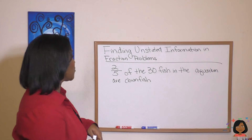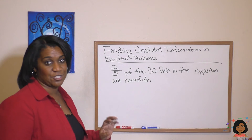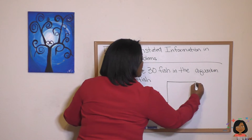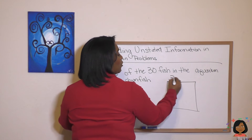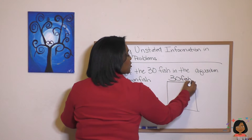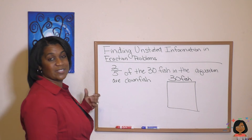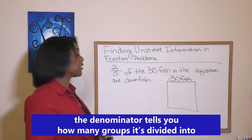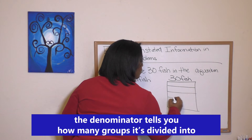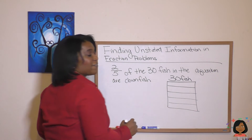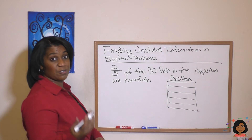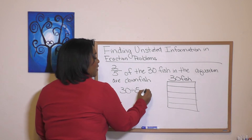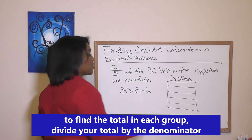Let's take a look. The first question is: how many parts are the fish divided up into? I want to draw a diagram to help us understand what's happening here. Here's my diagram — I've got 30 fish total, and I want to break them into some groups. They told us how they broke it up: two-fifths, which means they broke it up into five separate groups — one, two, three, four, five. If there are five groups and 30 fish, we do 30 divided by five, which tells us there are six fish in each group.